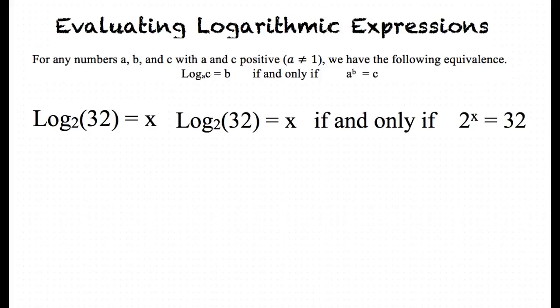Now we can solve for x by using our new expression. 2 to the x power equals 32. By looking at this expression we can see that 32 is the same as 2 to the fifth power. So we rewrite our problem as 2 to the power of x equals 2 to the power of 5. Now by looking at the problem we can see that x must equal 5.